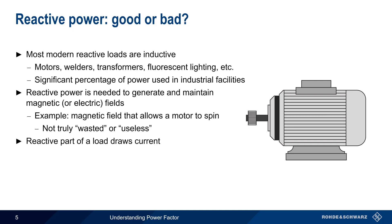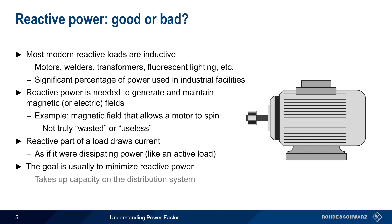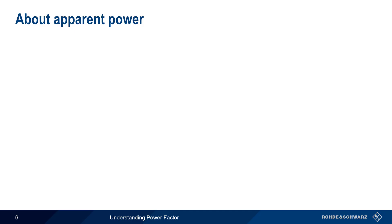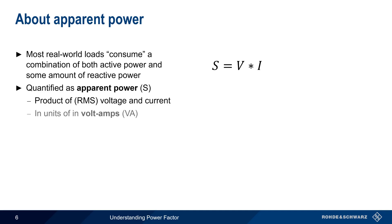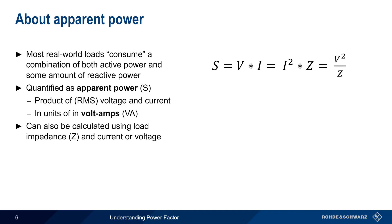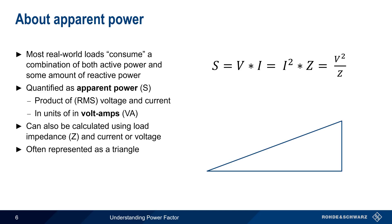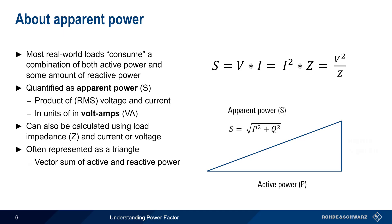That said, the reactive part of a load does still draw current, as if it were dissipating power. Therefore, the goal is usually to minimize the amount of reactive power, since this reactive power takes up capacity on the distribution system and can create problems such as overheating and voltage drops. With the exception of purely resistive loads, most real-world loads require a combination of both active power and some amount of reactive power. This combination is quantified as apparent power, abbreviated S. Apparent power is the product of RMS voltage and RMS current, and is therefore specified in units of volt-amperes. Perhaps the most common way that apparent power is represented is in the form of a triangle, since apparent power is also the vector sum of active and reactive power. We'll come back to this triangle in just a few moments.